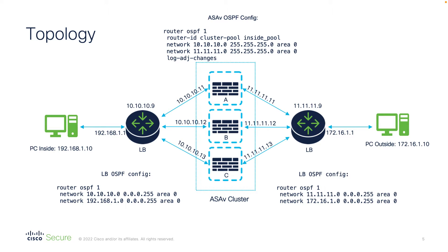Since the load balancer routers have identical metrics to reach the outside PC, it will balance traffic per packet per destination. I have already added unit A and B as cluster units, and in this demonstration we will be adding the third unit, unit C, to the cluster.